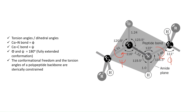Because the peptide bond has partial double bond character, it cannot rotate freely in all directions, so not all angles are allowed. Additionally, different amino acids have different R groups, and depending on how bulky the R group is, steric hindrance further restricts rotation. So not all amino acids can take any angle — that is not allowed.